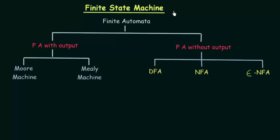Hello everyone. Welcome to the next lecture in Theory of Computation. In this lecture we will be studying about finite state machines, also known as finite automata. Finite automata is divided into two broad categories: finite automata with output and finite automata without output.